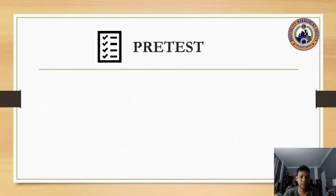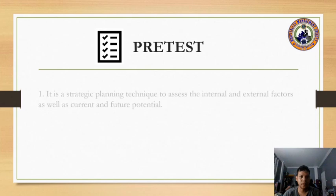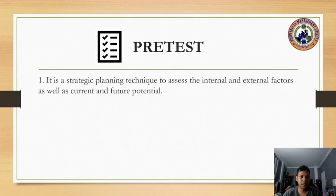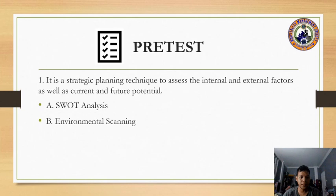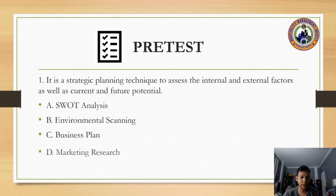Before we start our formal lesson, we will have a pre-test. Question number one: it is a strategic planning technique to assess the internal and external factors as well as the current and future potential. A) SWOT analysis, B) environmental scanning, C) business plan, or D) marketing research.